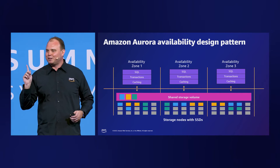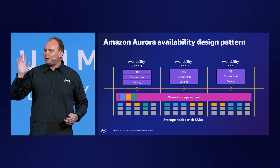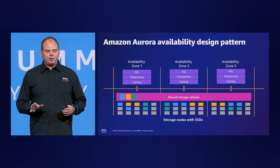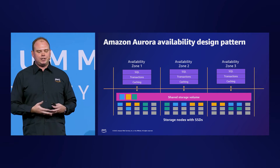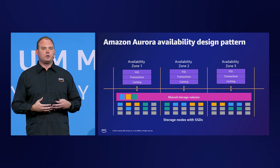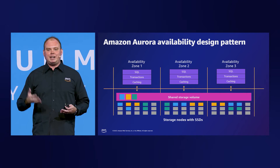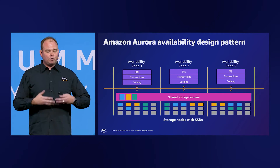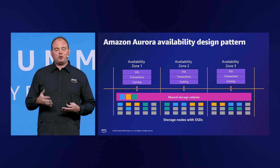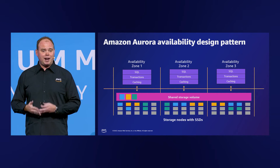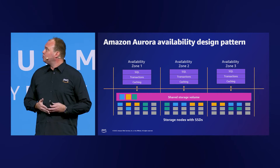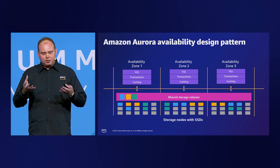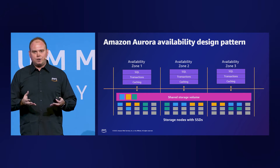Let's look at how it works, starting with the compute. You'll notice in each availability zone there's separate compute. On an instance failure, Aurora uses Amazon RDS's multi-AZ technology to automatically failover to one of up to 15 replicas you've created in any of your three availability zones. If no replica exists, we will attempt to create a new Aurora database instance automatically. Because of the separation between storage and compute, you don't have to wait on the database to hydrate — it simply attaches to the storage layer and you're up and running.